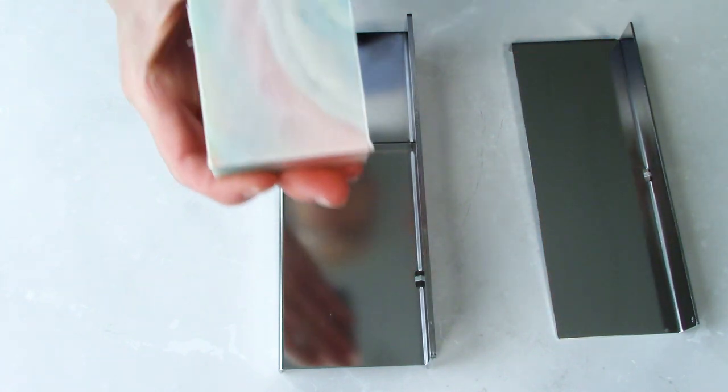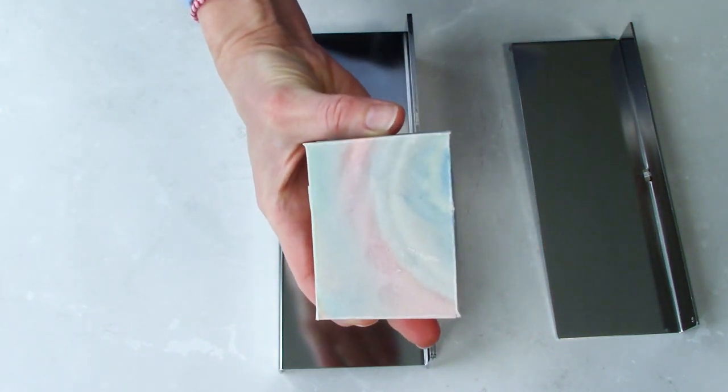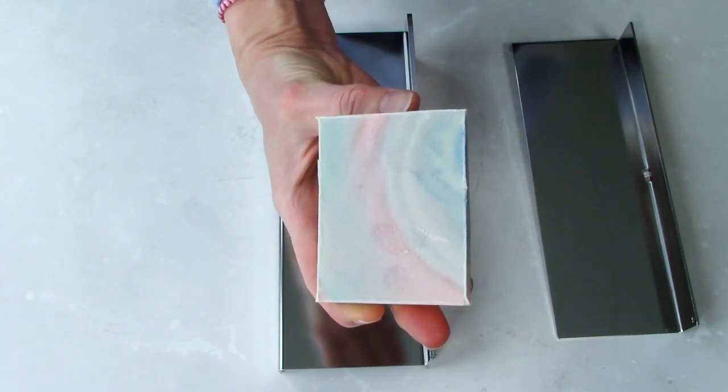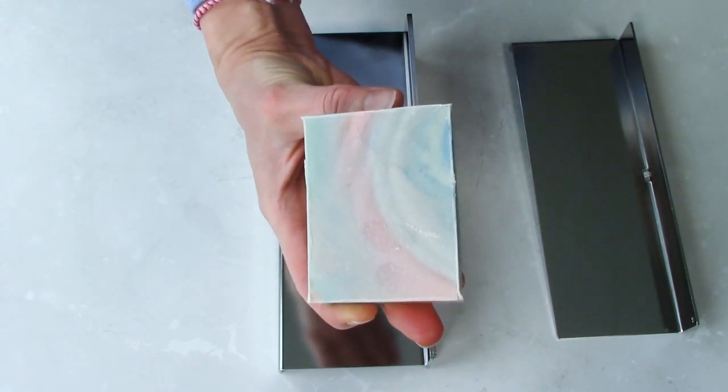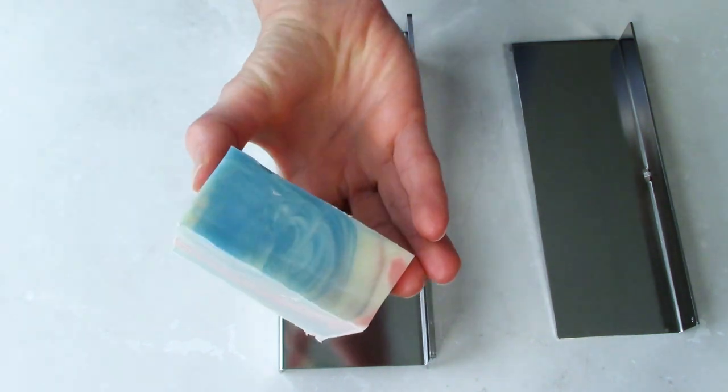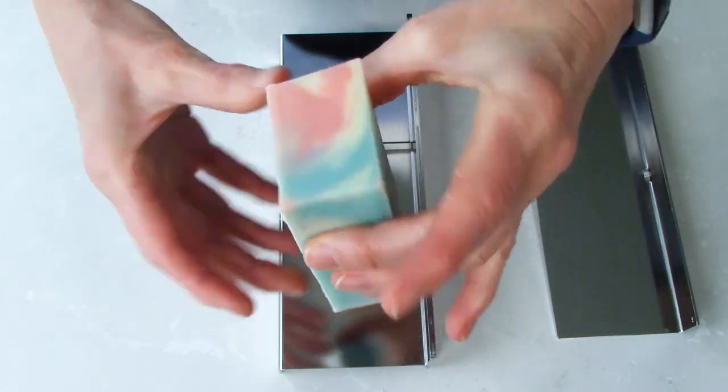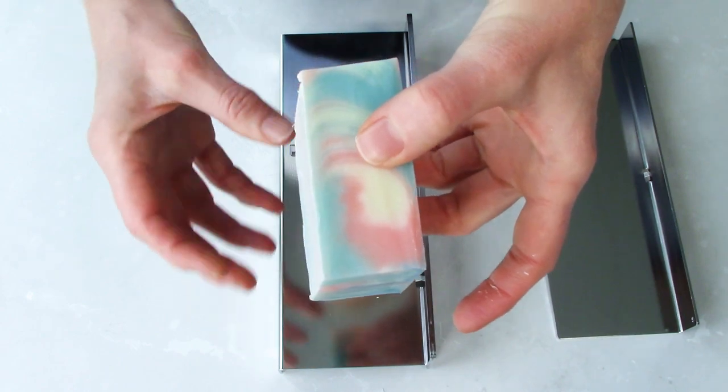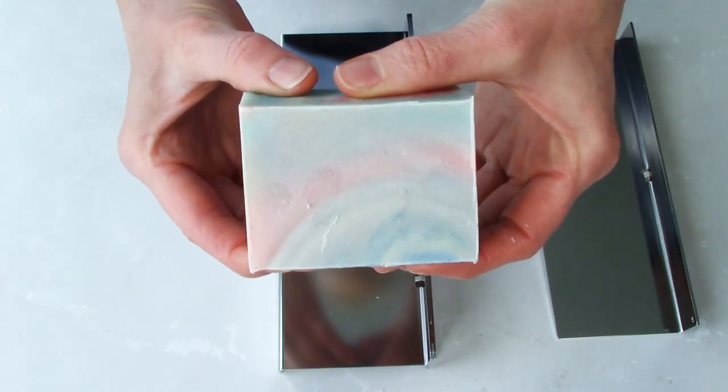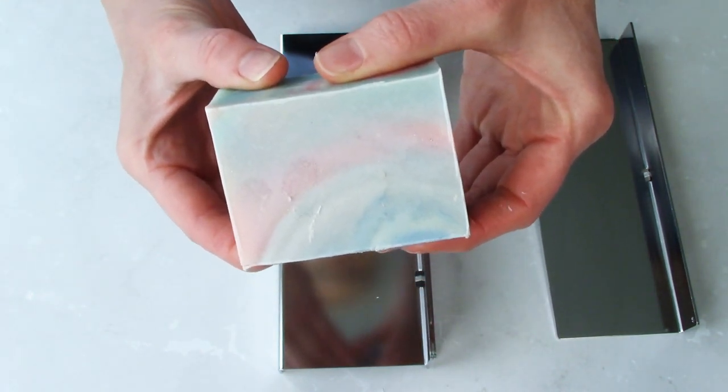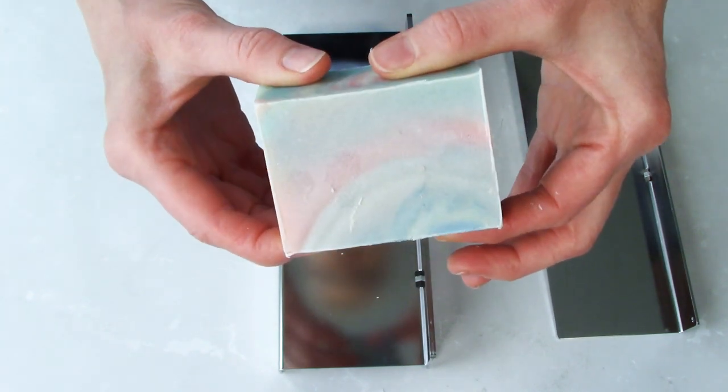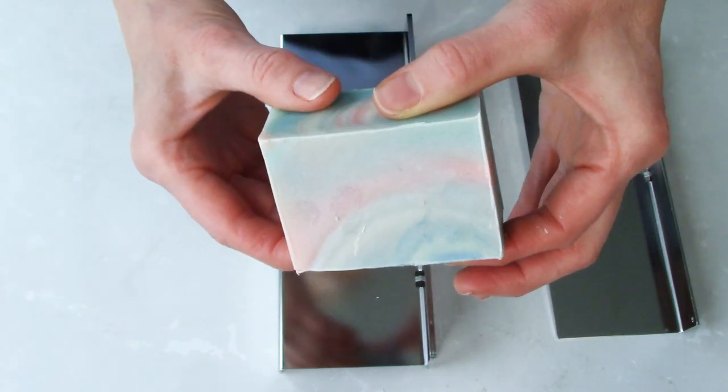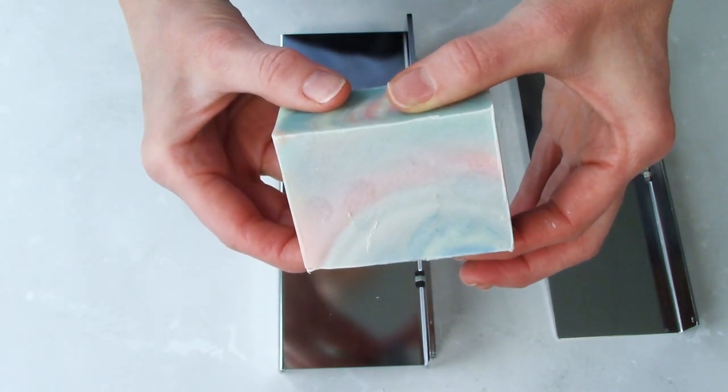And to do that, I happen to have these super ashy soaps that I made with the Kiss Pour, which is our upcoming February challenge. You can see on the sides that they've got some very interesting feathering inside, but it's really difficult to see it without planing off the tops. So I'm going to get some gloves on for this, and then I'll start planing.